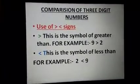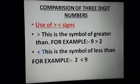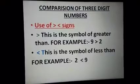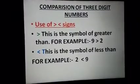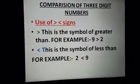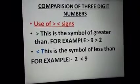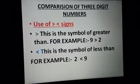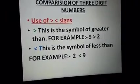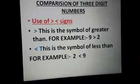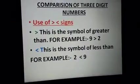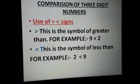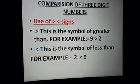Now comparison of three digit numbers. How you are going to compare two numbers which are having three digits? First of all you should know about the symbols that we use. The symbol in green color is the symbol of greater than. For example, 9 > 2. The symbol in blue color is the symbol of less than. For example, 2 < 9.